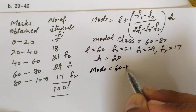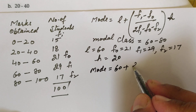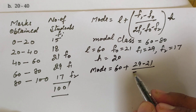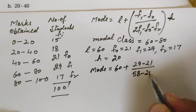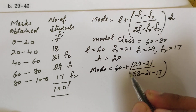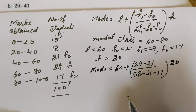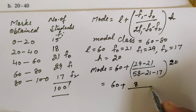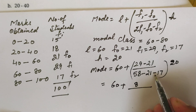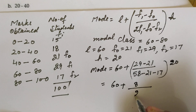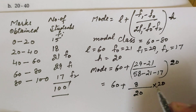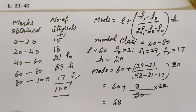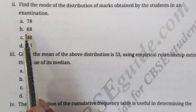Substituting into the formula: Mode = 60 + [(29 - 21) / (2×29 - 21 - 17)] × 20 = 60 + [8 / 20] × 20 = 60 + 8 = 68. So the mode is 68, and option B is correct.